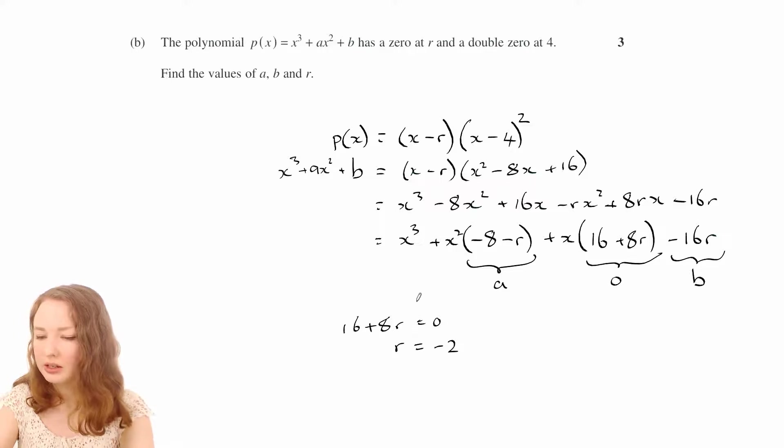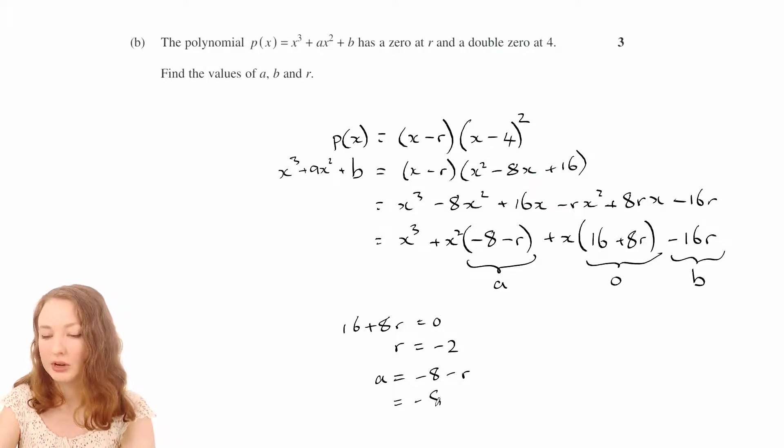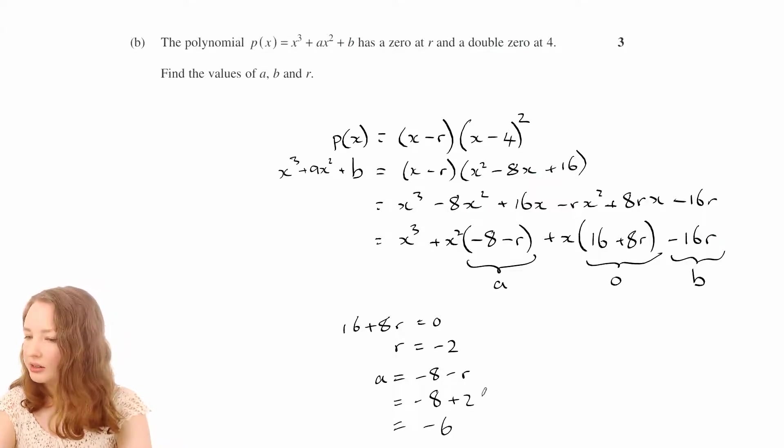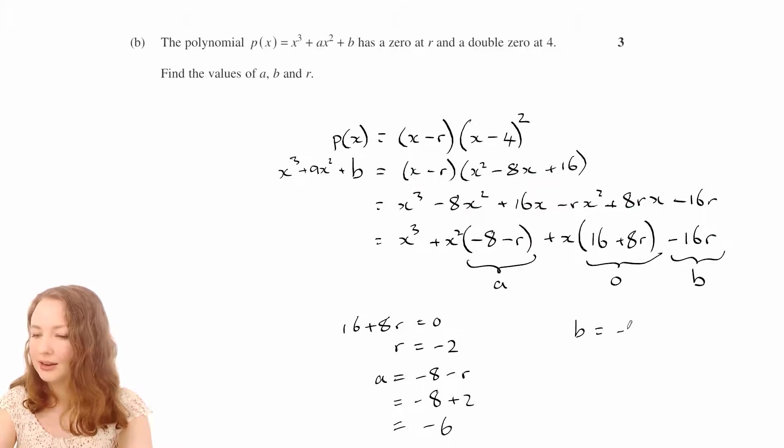And then if you plug that in, we've got a equals negative 8 minus r, which is negative 8 plus 2, if r is negative 2, then that makes negative 6. And we've got that b is negative 16r, and if r is negative 2, then that makes 32.